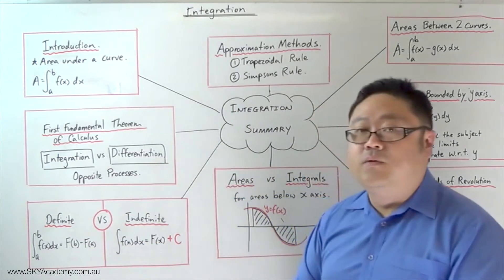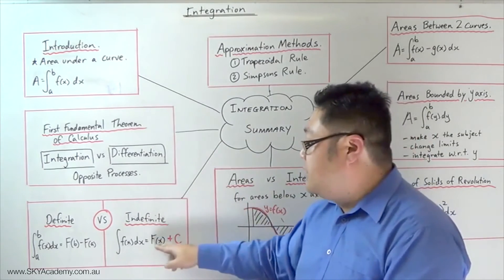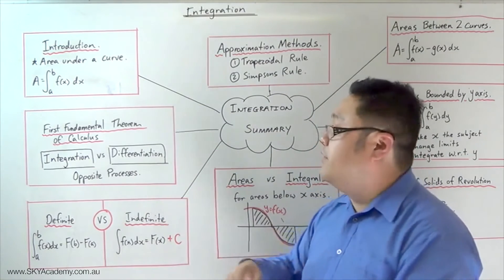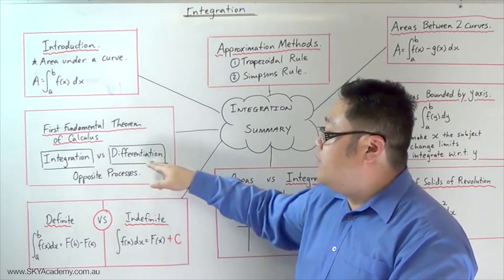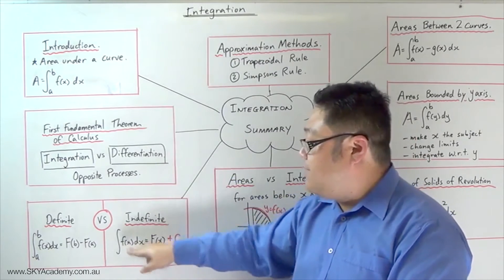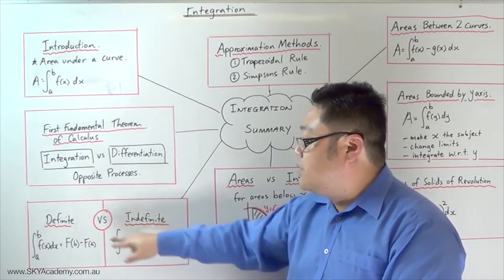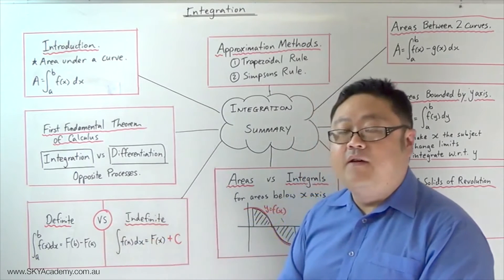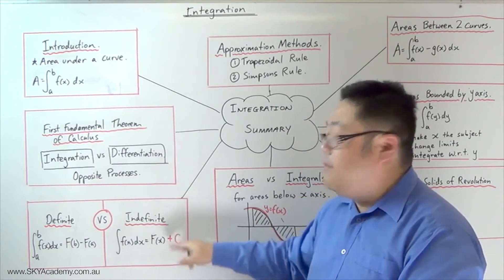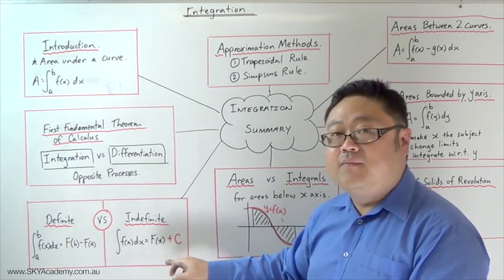The indefinite integral, on the other hand, gives you a general rule or a general function, which is exactly the same as the primitive, or the reverse of the differential, the anti-derivative of a function. But this time, the difference between an indefinite integral and a definite integral is that you don't have upper and lower limits. Because you don't have your limits, what we need to remember when we integrate an indefinite integral is to add c.